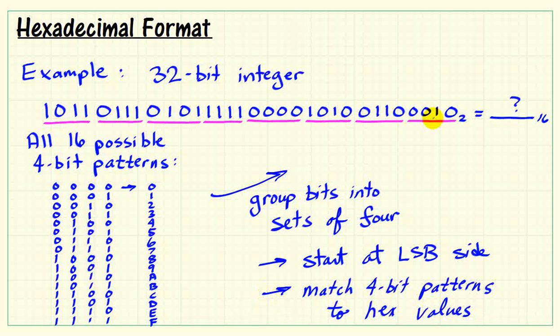Then, go ahead and match the 4-bit patterns to those hex or hexadecimal characters or values. So here, I'm just looking to find matches in the binary patterns. Then I write down the numerical value. And if you end up doing this kind of thing a lot, eventually you will be able to commit all of these values to memory and be able to do this pretty quickly.